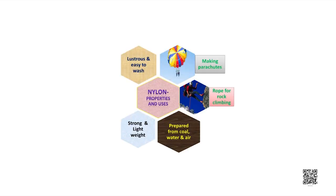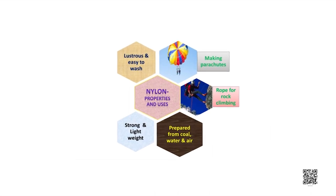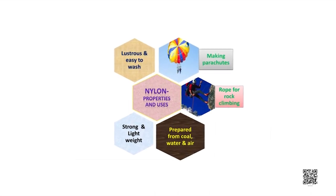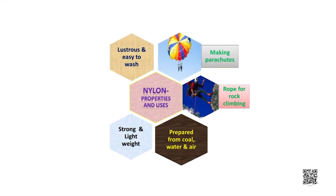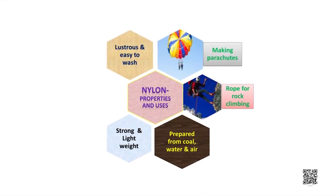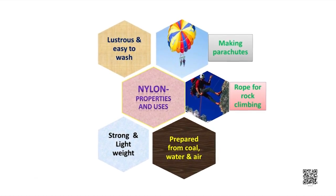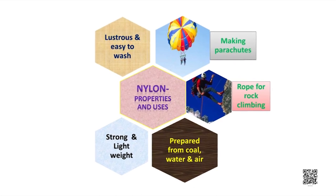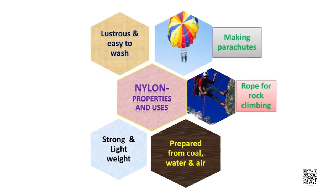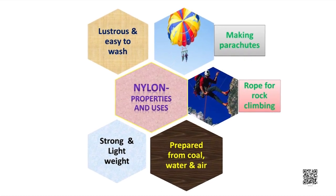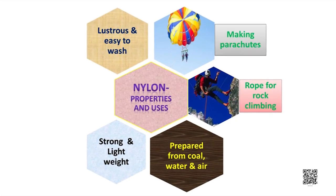Rayon is also mixed with cotton to make bedsheets, or mixed with wool to make carpets. Now let us discuss the properties of another synthetic fiber named nylon. It was prepared from coal, water and air. It has very good strength and is lightweight. Therefore, it is used for making parachutes and ropes for rope climbing. A nylon thread is stronger than a steel wire, and it is lustrous and easy to wash, making it a common fiber for clothes.